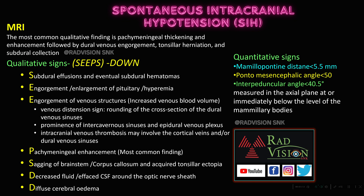S is subdural effusions. E is engorgement or enlargement of the pituitary. E is engorgement of the venous structures — the venous distension sign. P is pachymeningeal enhancement. S is sagging of the brainstem or corpus callosum. D is decreased fluid or effaced CSF around the optic nerve sheath. D is diffuse cerebral edema. The quantitative signs are: mammilopontine distance less than 5.5 mm, pontomesencephalic angle less than 50°, and interpedicular angle less than 40.5°.